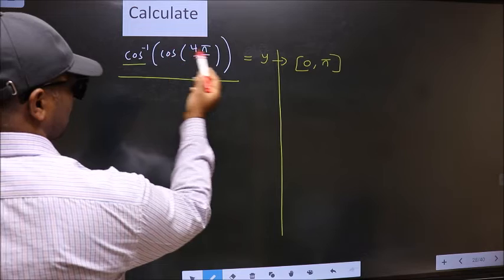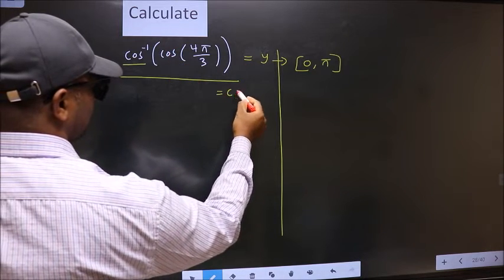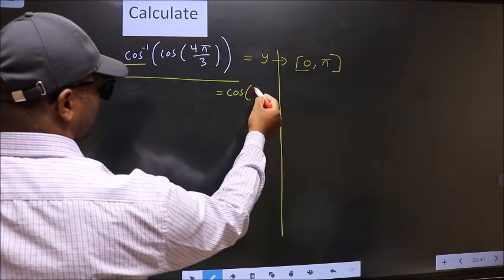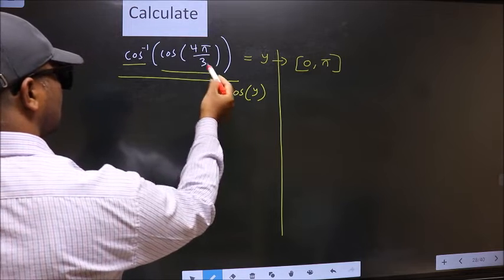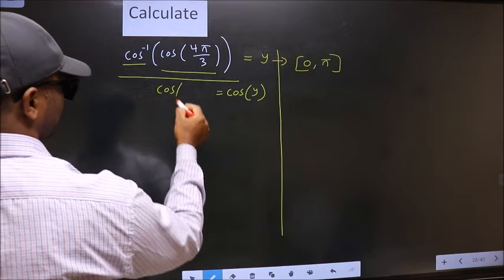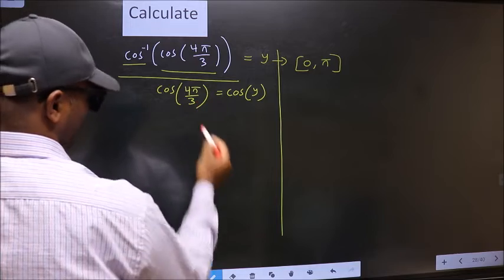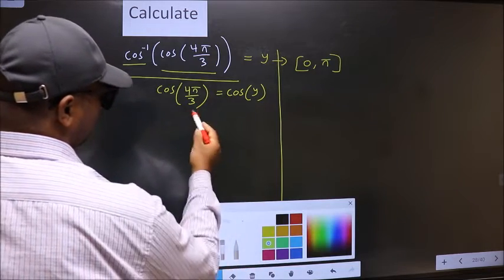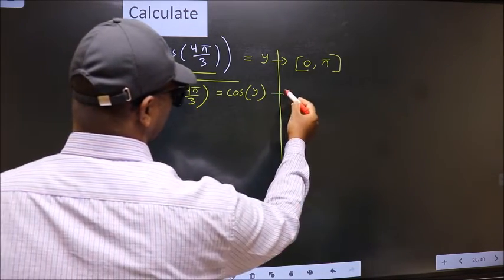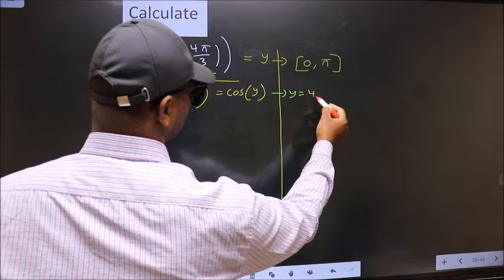Shift cos inverse to the other side. It will become cos y. And this no change. Now comparing both sides we get y to be 4 pi by 3.